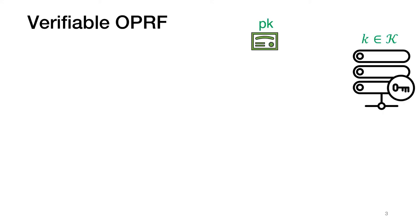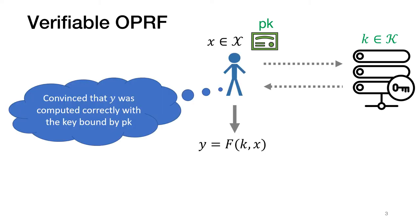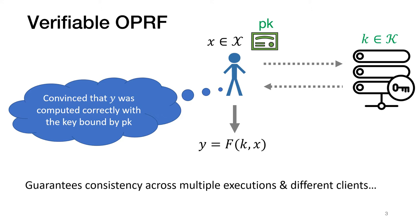In a verifiable OPRF, the server first publishes some sort of public key that binds it to a particular PRF key. Then, in the execution of the protocol, the client can use this public key to check the response from the server and be sure that the PRF output has been computed correctly using the PRF key bound by this public key. This prevents a malicious server from equivocating and guarantees multiple clients across multiple executions that all their outputs have been computed consistently using a single key.